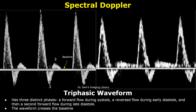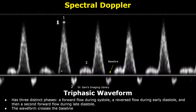Here is another example of a triphasic waveform. We have a forward flow component, then a reversed flow component, and a third forward flow component. The waveform has crossed the baseline. This is another example of a triphasic waveform — we see three distinct phases or components during a cardiac cycle, so we consider it a triphasic waveform.